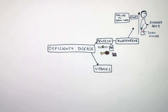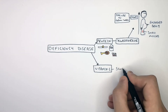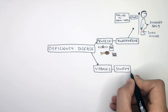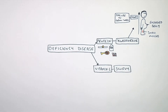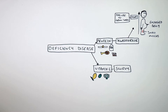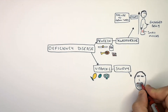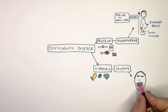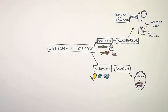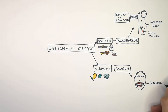A deficiency in vitamin C will lead to a disease called scurvy. Scurvy can be caused by not eating enough lemons, limes or broccoli, for example. The main symptom of scurvy is bleeding gums. If it gets more serious, your teeth will fall out. So that is scurvy, caused by vitamin C deficiency.